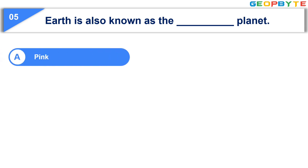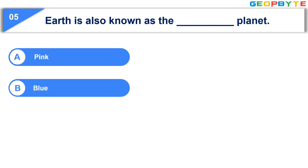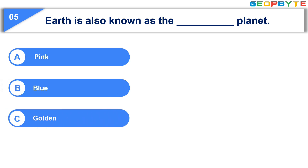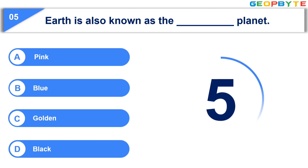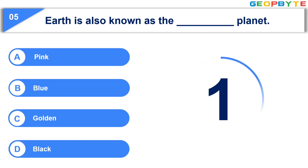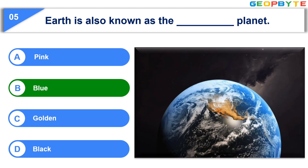The fifth question: Earth is also known as the dash planet. Option A, pink. Option B, blue. Option C, golden. Option D, black. Your time starts now. Your time is up and the correct answer is Option B, blue.